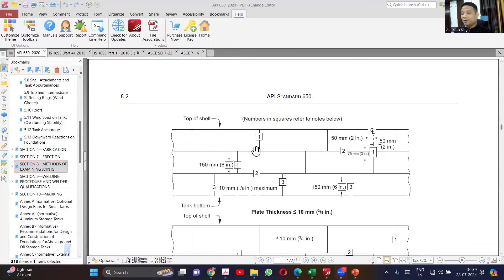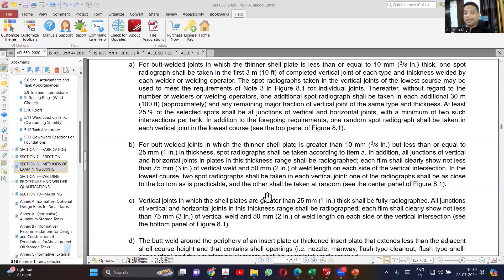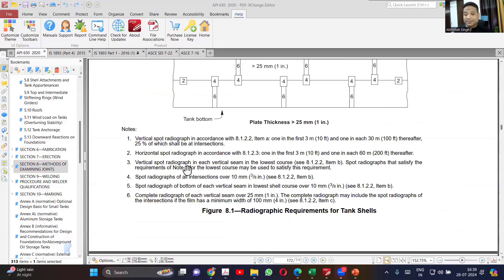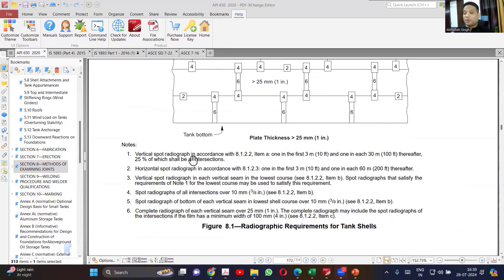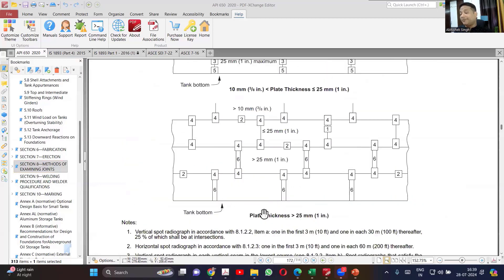Like this is the long seam, there will be one spot radiography. Or like based on the length, you can see in here also, vertical spot radiography for first 3 meter, and then every 30 meter one spot. So like that, for every seam, there is a radiography requirement mentioned. And if you are fulfilling that, it is considered that the formula is good enough for you.